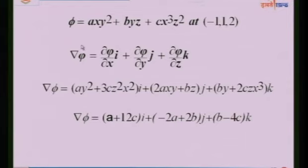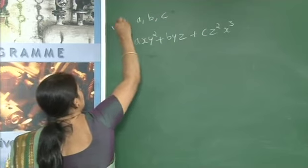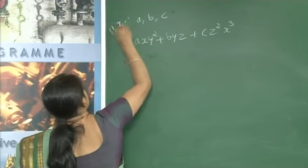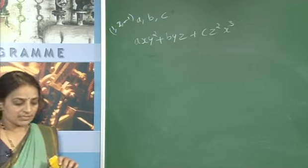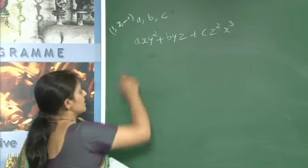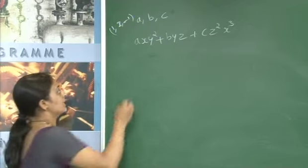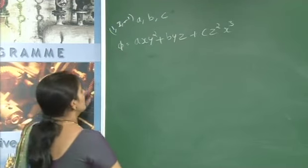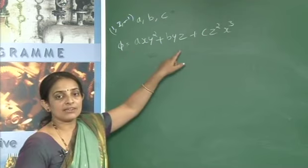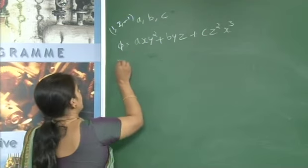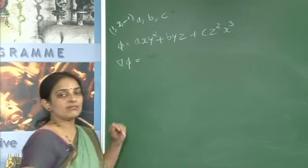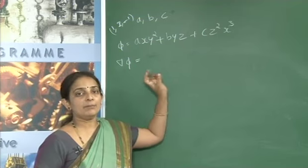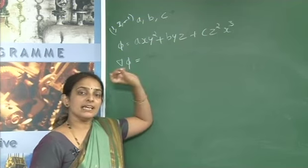Find A, B, C such that the directional derivative of φ = Axy² + Byz + Cz²x³ at point (1, 2, -1) has magnitude 64 units in the direction parallel to the z-axis. Call this function φ. We need to find grad φ.